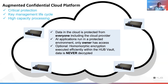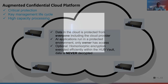Homomorphic encryption allows you to manipulate data in its encrypted form. In most cases, data is encrypted, then decrypted for manipulation, and then re-encrypted. Homomorphic encryption allows you to do the manipulation on data in its encrypted form, and this needs specific support from hardware in order to be done efficiently.